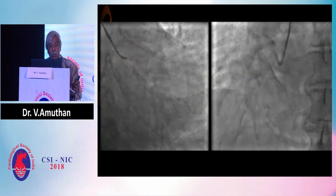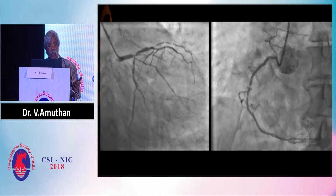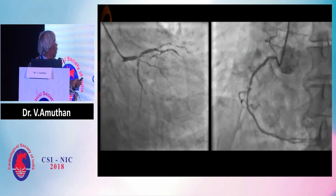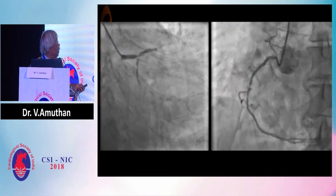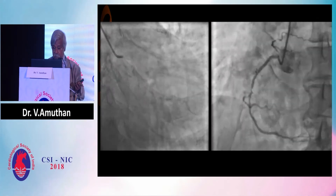This patient was taken up for angiogram, and you can see a bifurcation lesion, thrombus in the circumflex, and a mid-ostial lesion.